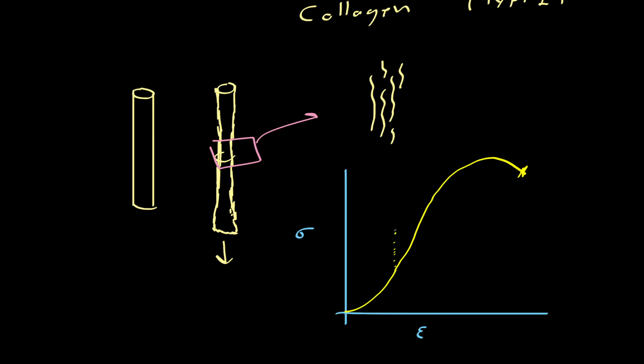The existence of that toe region is a consequence of having these wavy collagen fibers that each individually start getting straightened out as you pull on the tendon. More and more of these get straightened out as we move up the stress-strain curve.